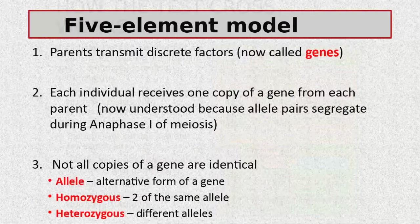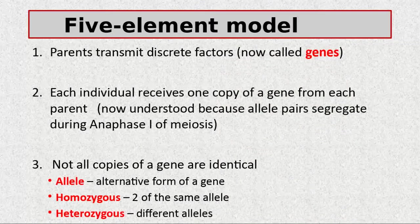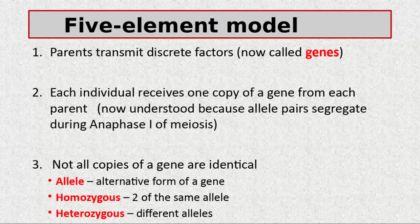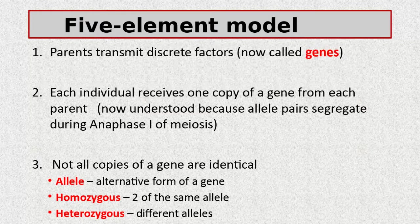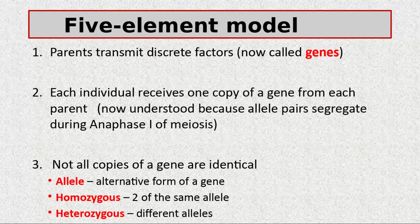Let's summarize. There are five elements from Mendel's experiments. First, each individual receives one copy of a gene from each parent — we now know this because all pairs segregate during anaphase via independent assortment. Second, not all copies of genes are identical — some are homozygous (two of the same allele) and some are heterozygous. Third, alleles remain distinct with no blending. Fourth, the presence of an allele does not guarantee its expression, since some are dominant and some are recessive.